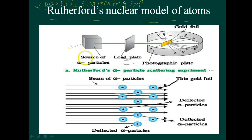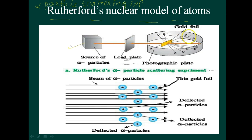So to summarize the setup: a stream of alpha particles from a radioactive source was directed at a thin gold foil, and the thin gold foil had a circular fluorescent zinc sulfide screen around it.